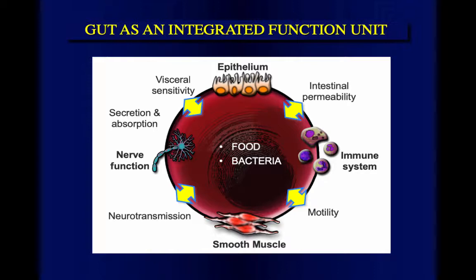The nerves spread from the esophagus all the way to the rectum, and even if we disconnect the brain, the gut will still be able to work on its own. We also have the immune system there — the strongest immune system in the body is the gastrointestinal system, especially the small intestine. It has been clearly shown that any immune activation can affect motility, affecting both the muscle and the nerves.